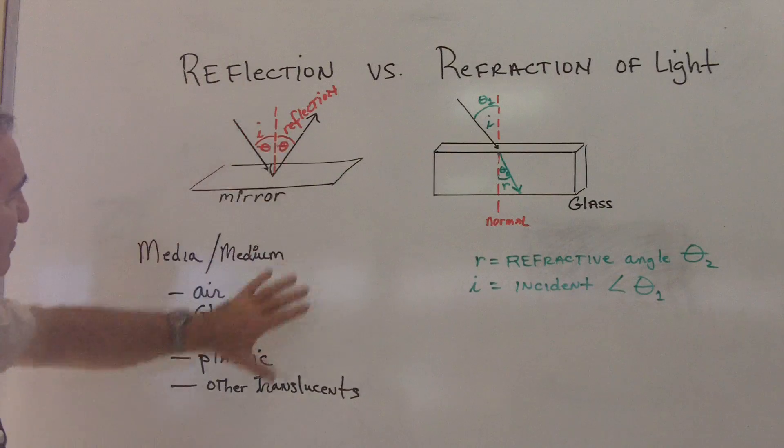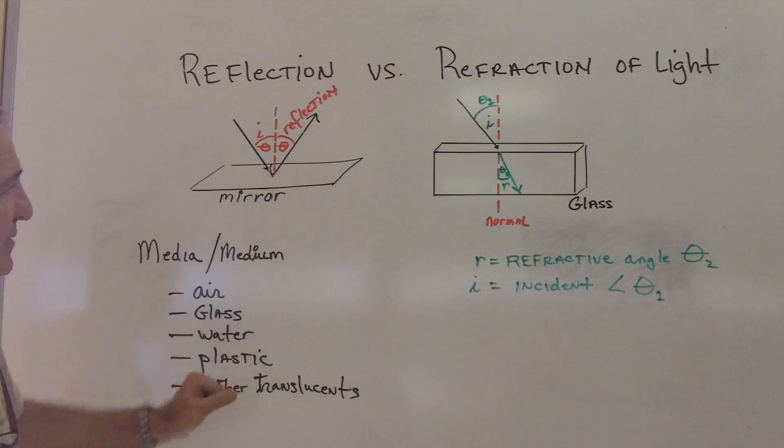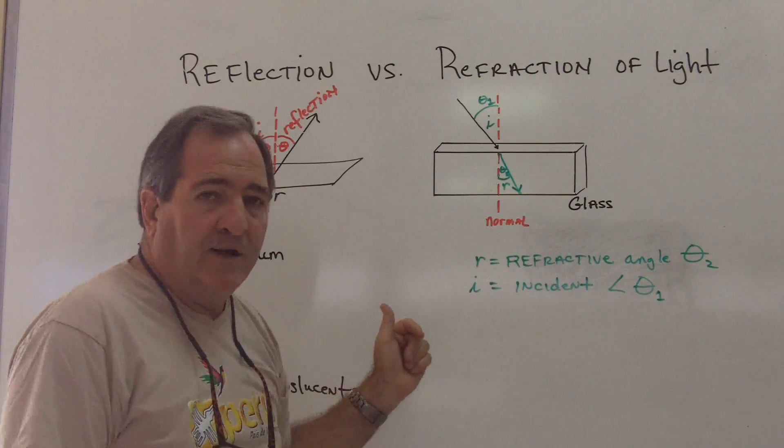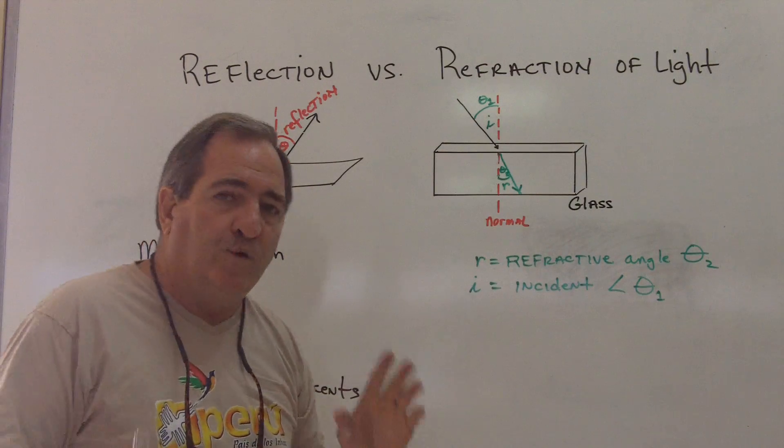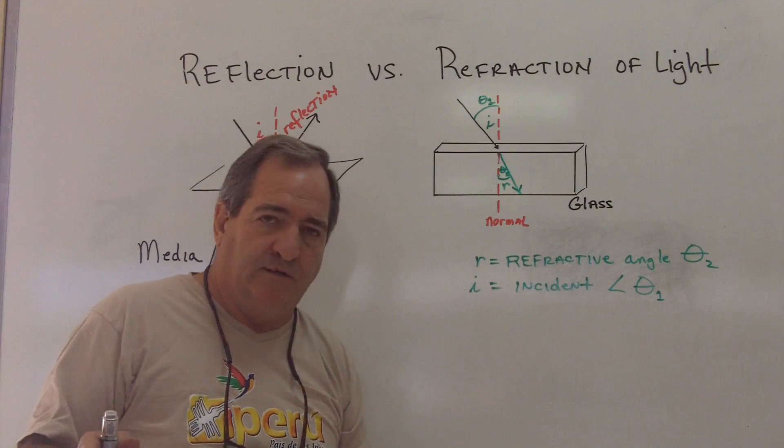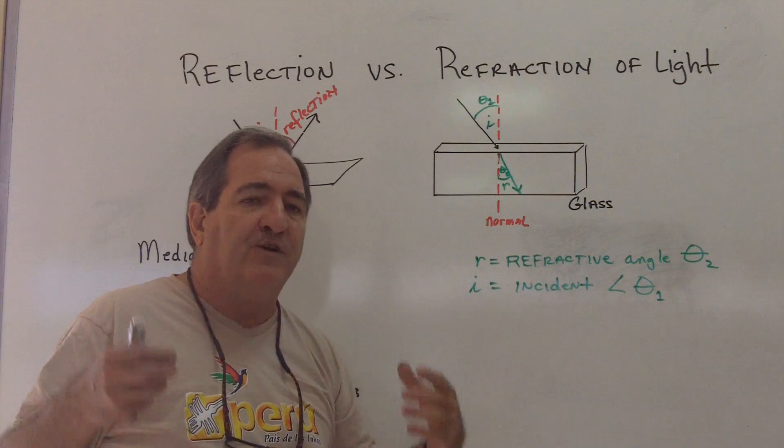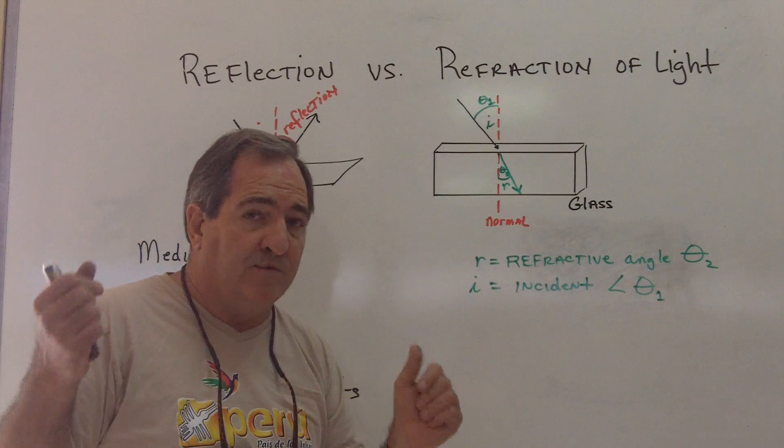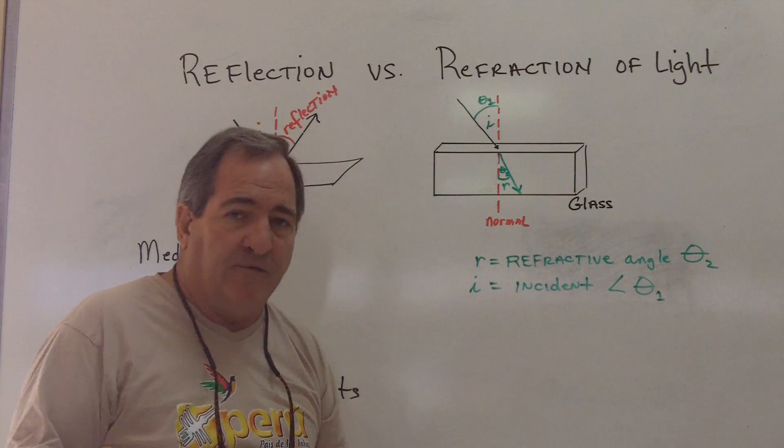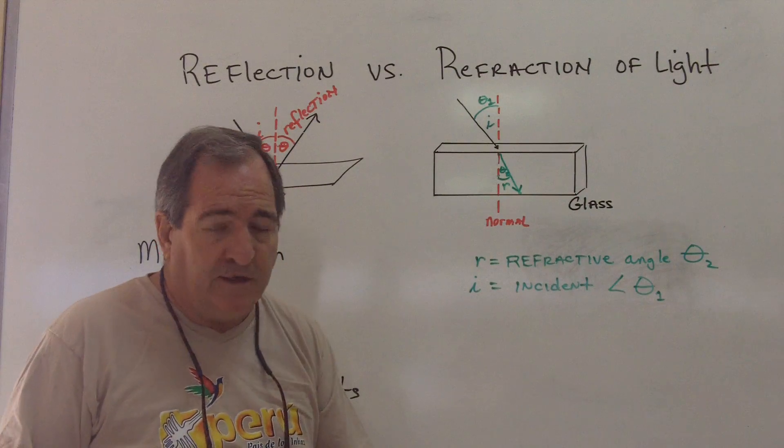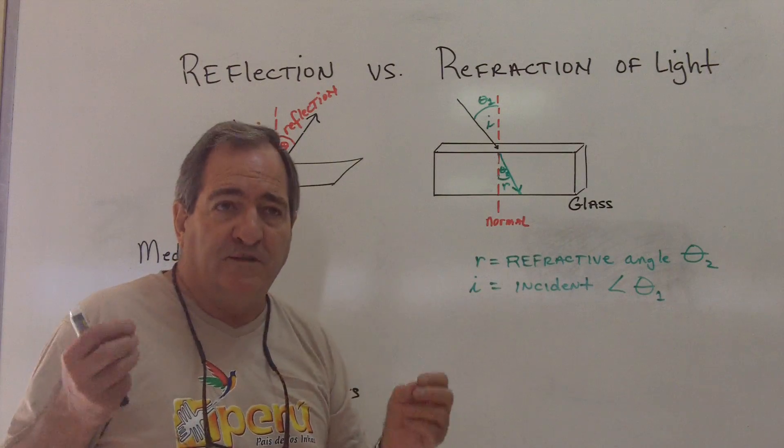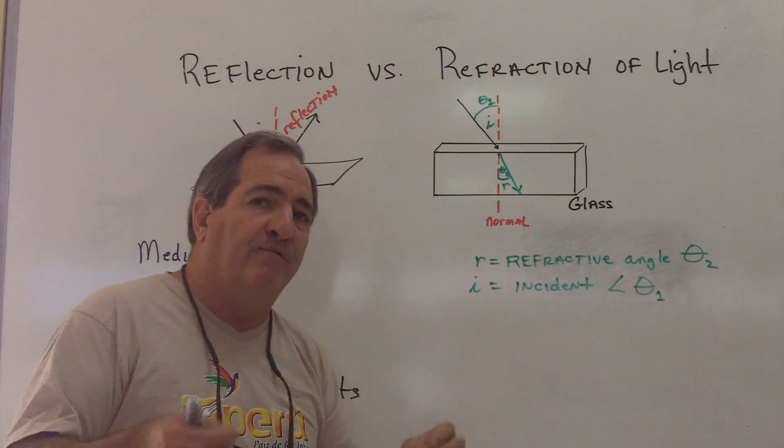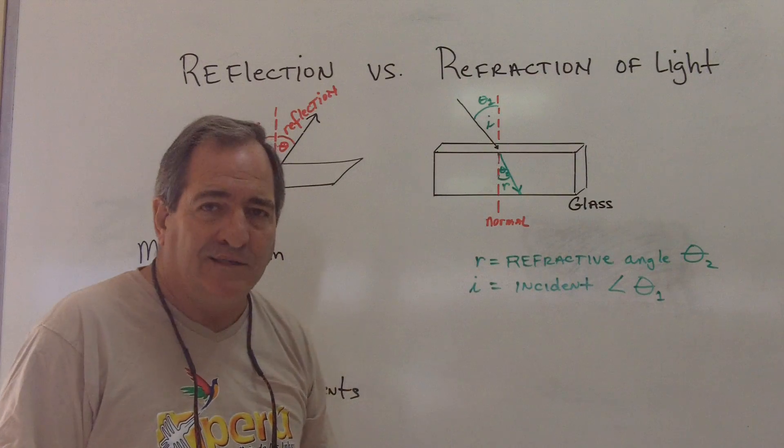Now so we've covered what is reflection. Now let's talk about refraction. Refraction talks about how light bends. When you change the speed of light that's coming in, if it goes into a new medium which can be air from a vacuum in space, it can be from air to glass, it can be from air to water, the speed of that light changes. And when the speed of that light changes, it bends light.